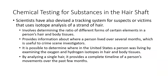Scientists have also devised a tracking system for suspects or victims that uses isotope analysis of a strand of hair. It involves determining the ratio of different forms of certain elements in a person's hair and body tissues, which provides information about where a person lived over several months. This is useful to crime scene investigators because it either supports or refutes an alibi. If a person claims they didn't live in a particular location during the commission of a crime, but the isotope data from their hair proves otherwise, it obviously looks bad for the individual.